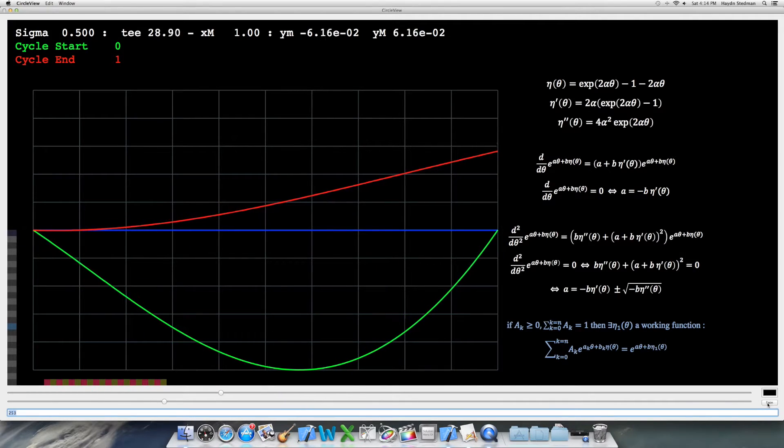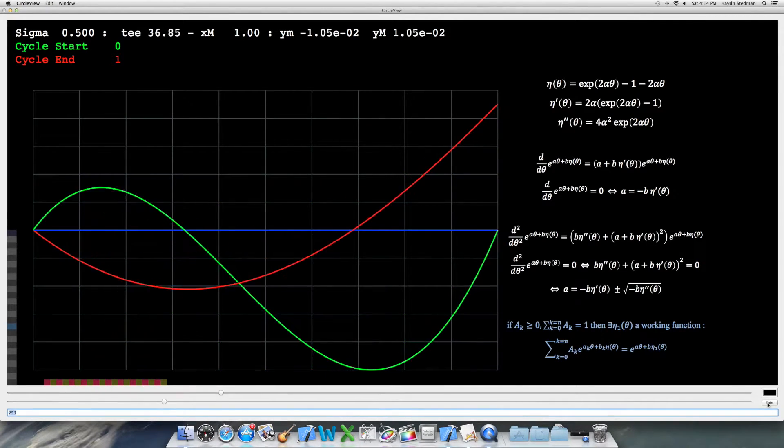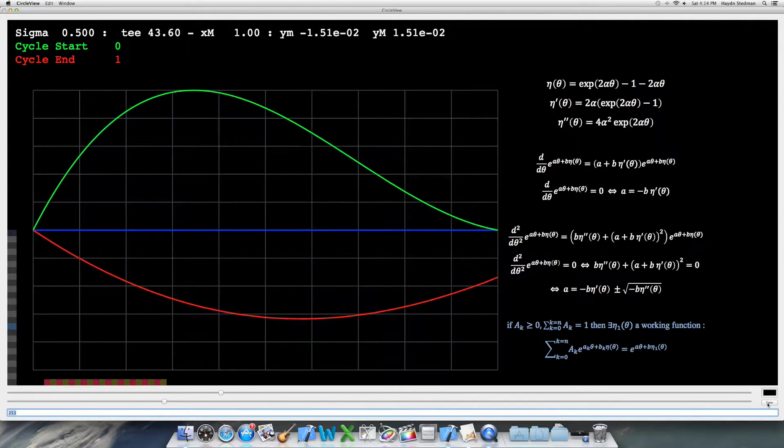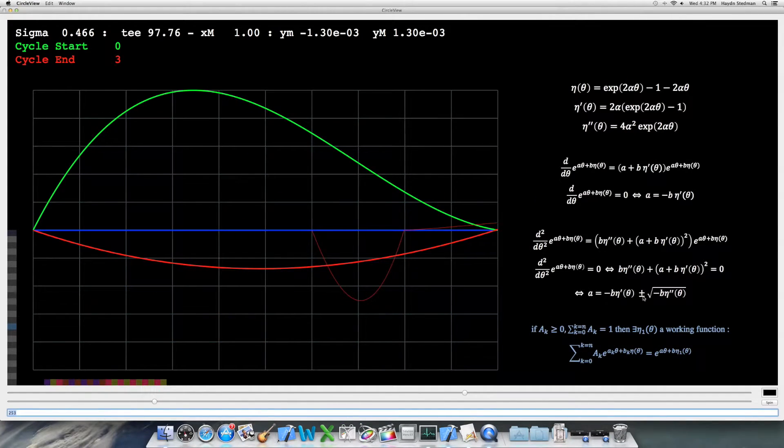The key result is that if AK are greater than 1, sum to 1, then there exists some working function such that this is the case, where A and B are clearly functions of sigma and alpha.